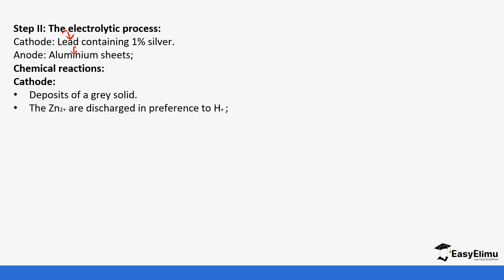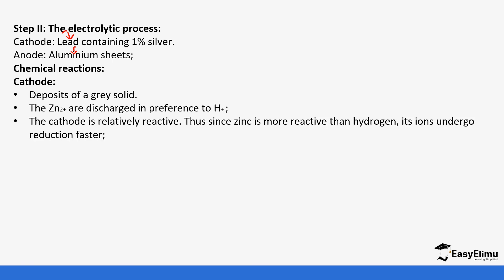For the electrolysis, the anode is aluminium sheets and the cathode is lead — these are not inert electrodes, which allows for better preferential discharge. At the cathode, deposits form showing that zinc ions are preferentially discharged. Although zinc has a higher tendency to lose electrons than hydrogen, it is still preferred at the cathode due to the specific electrodes used.